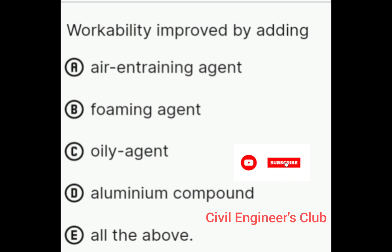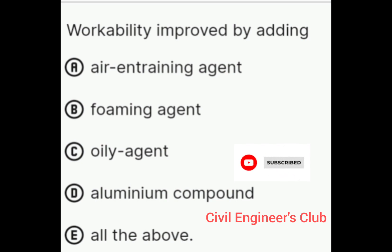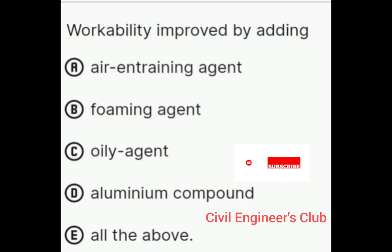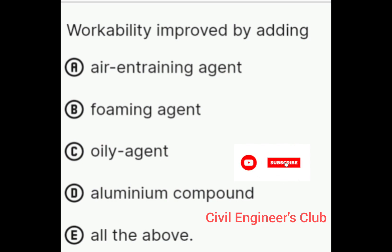The last question: Workability is improved by adding — Option A: air entraining agent, Option B: foaming agent, Option C: oily agent, Option D: aluminum compound, Option E: all of the above. The correct answer is all of the above. The workability of concrete improves by combining all the above agents.